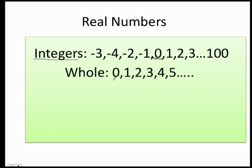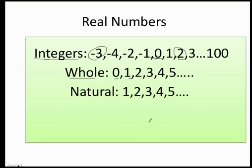Then you have the whole numbers. Whole numbers are integers that go like 0, 1, 2, 3, 4, 5, and so on. If you have negative 3, it will be an integer but it's not a whole number. But if you have the number 2, the number 2 is an integer and it's also a whole number.